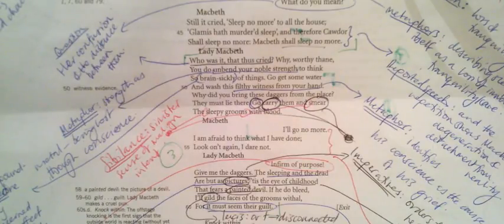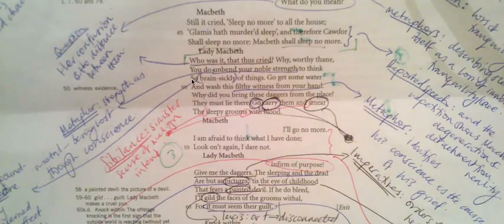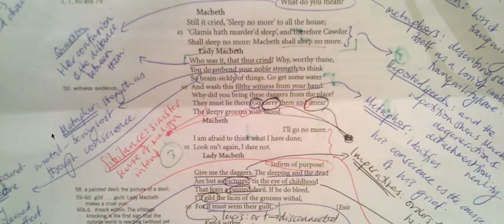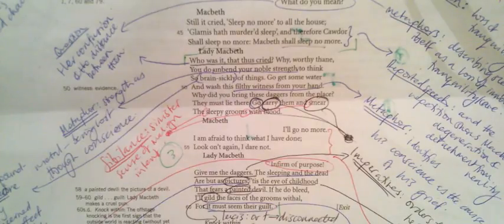She isn't fully capable of understanding the extent of his guilt. She says 'Why, worthy thane, you do unbend your noble strength.' We see his strength metaphorically represented as some kind of metal that's being lost through conscience. That comes back to his origins as a violent, powerful soldier.